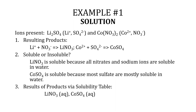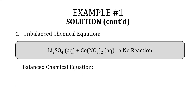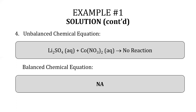The resulting products are LiNO₃ and CoSO₄. It is determined that LiNO₃ is soluble in water because all nitrates and lithium ions are soluble in water, and CoSO₄ is also soluble because most sulfates are soluble in water. The results via the solubility table show LiNO₃(aq) and CoSO₄(aq). Therefore, the unbalanced chemical equation for Li₂SO₄(aq) + Co(NO₃)₂(aq) results in no reaction, and the balanced chemical equation is not applicable.